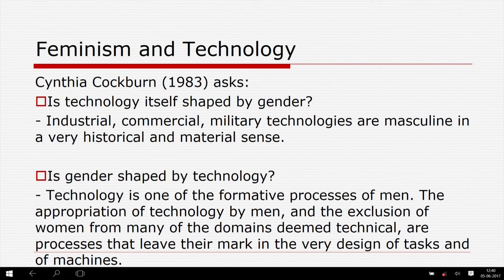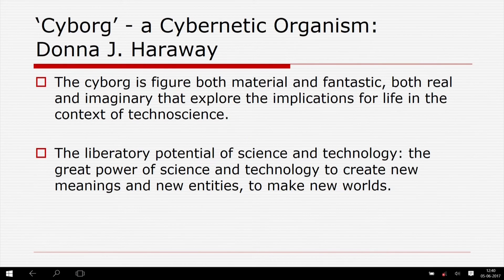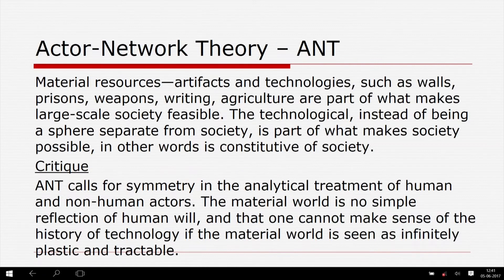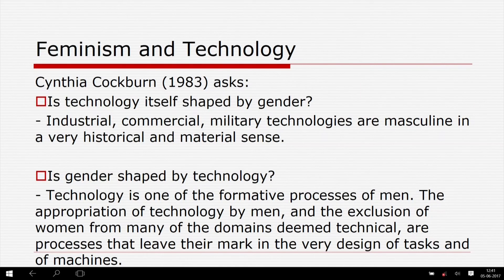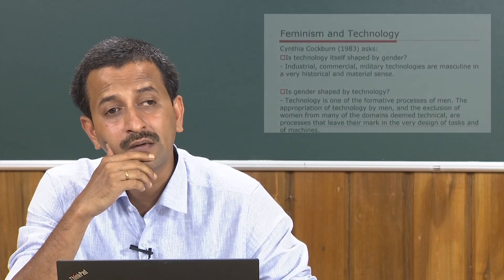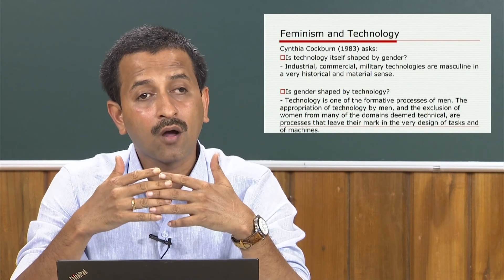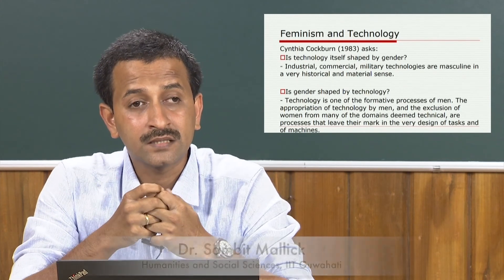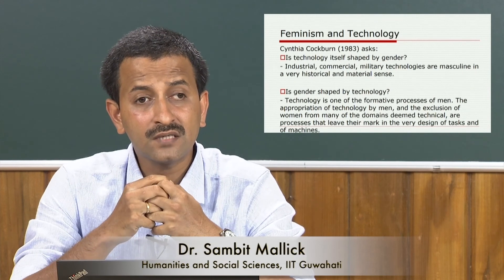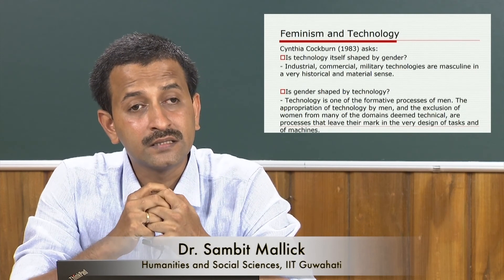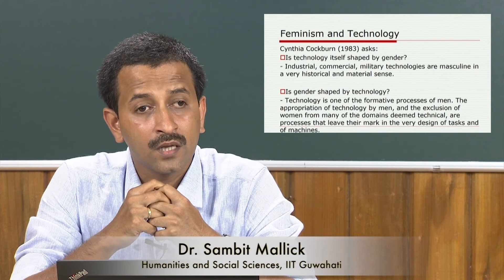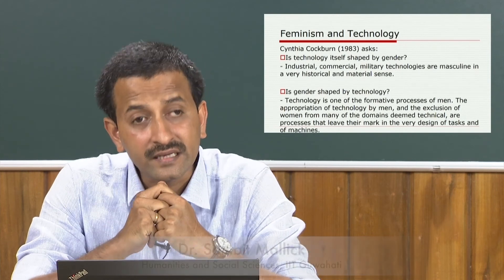The critique of the ANT approach is that it calls for symmetry in the analytical treatment of human and non-human actors. The material world is no simple reflection of human will, and one cannot make sense of the history of technology if the material world is seen as infinitely plastic and tractable. Coming to constructing gender — we can look at how feminism examines technology, and how technology is shaped by gender. We will discuss this in the lectures to follow.